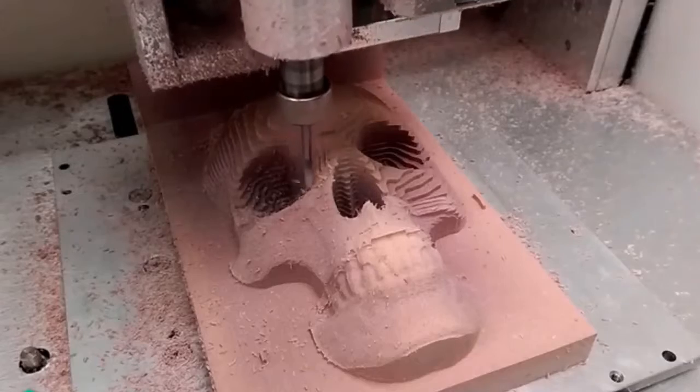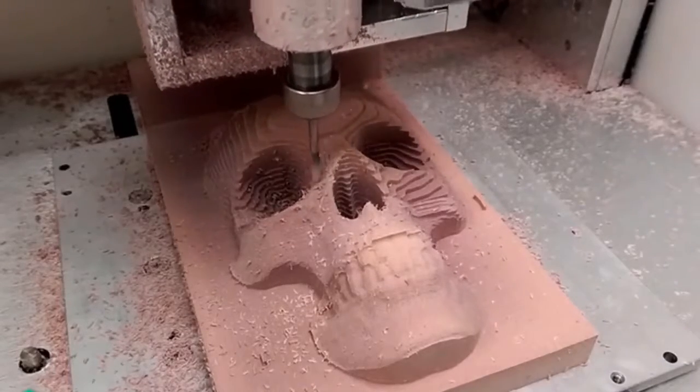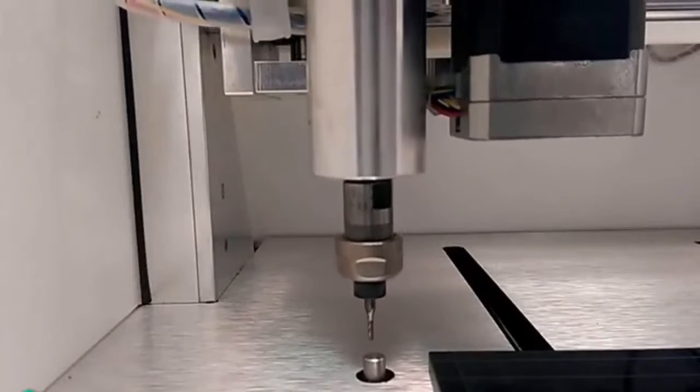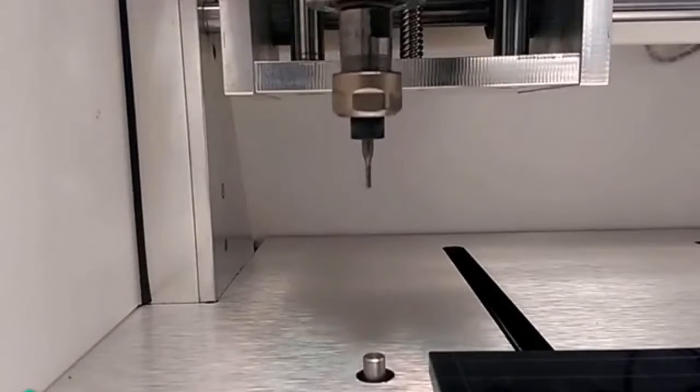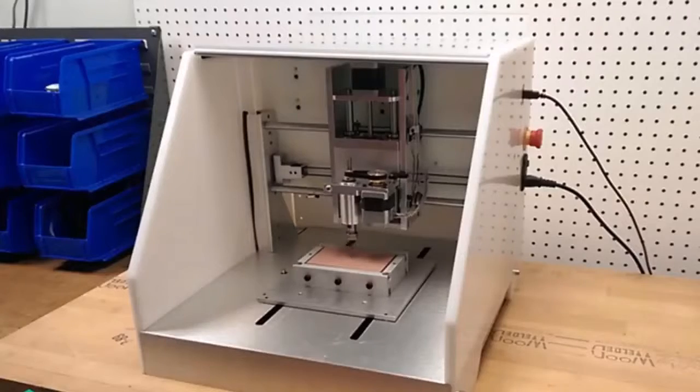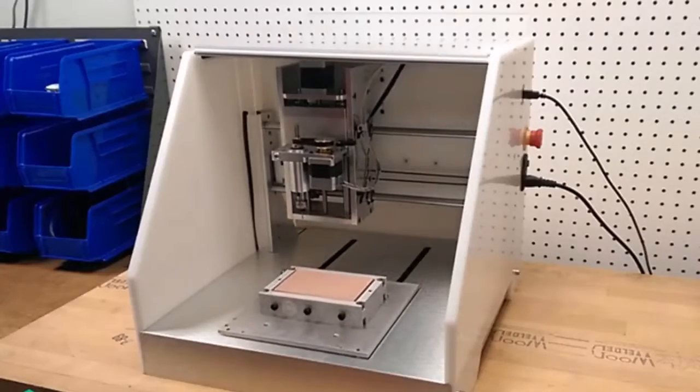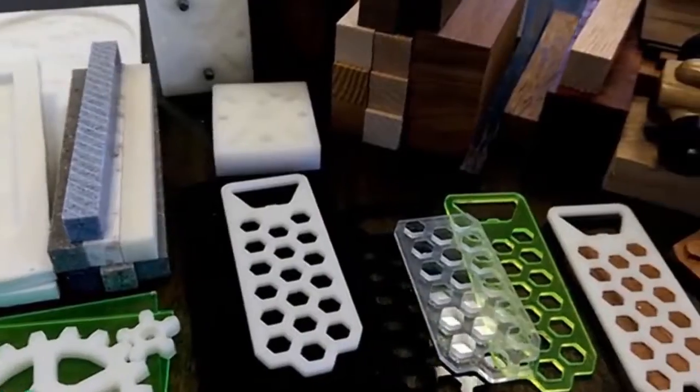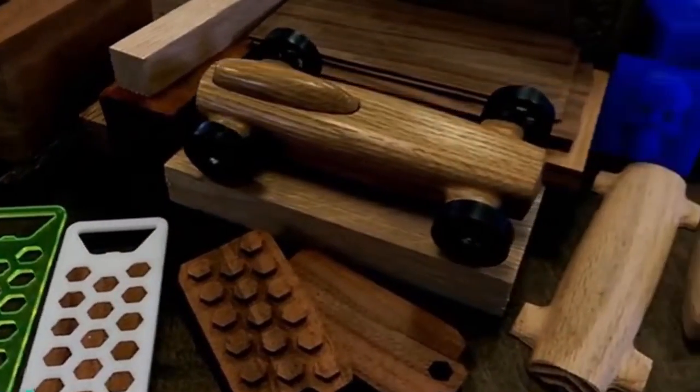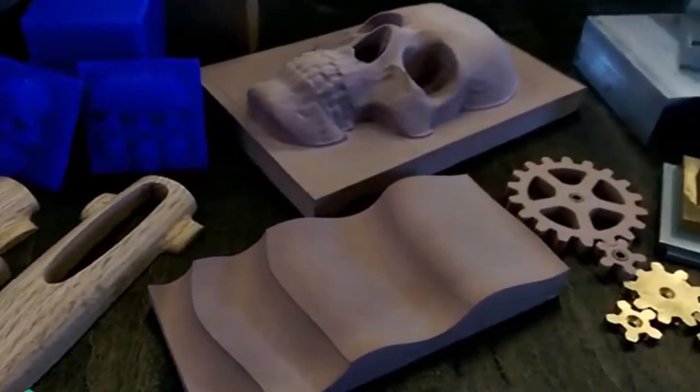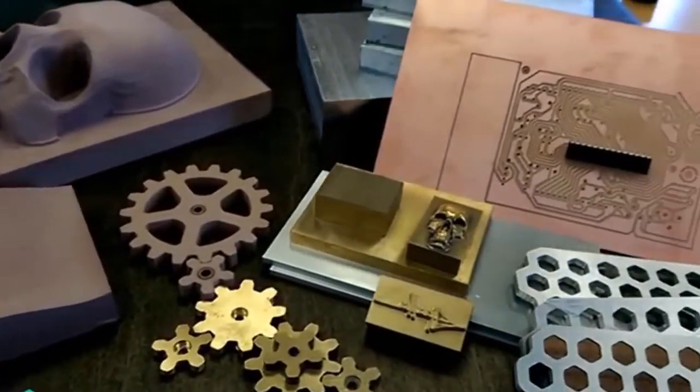We optimized the Nomad for fast movement while machining complicated 3D parts, and to make your life easier, we added automatic tool length setting, homing, and designed fixtures that make material setup and two-sided machining easier. The Nomad cuts plastics like ABS, Delrin, and acrylic, hardwoods, machining wax, and metals like aluminum and brass.